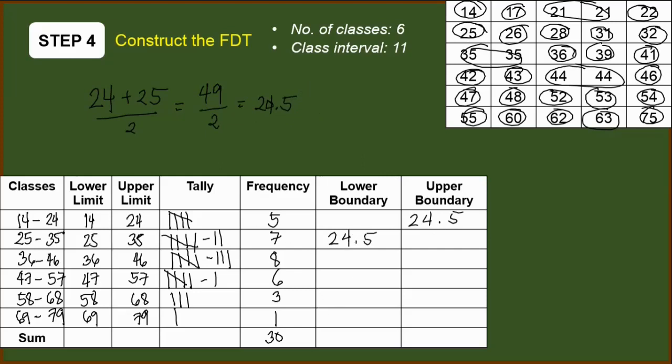24 plus 25 is 49 divided by 2. That is 24.5. Meaning, this 24.5 will be the upper boundary of the first class and the lower boundary of the second class. Same applies with 35 and 36. We will get their average, and we will be arriving with a value of 35.5. This is also 35.5. Next, we have 46 and 47. Getting their average, we have 46.5, and this is also 46.5. Doing the same process, we will be arriving with 57.5. By the way, you may also notice that their difference is also 11, so we can just add 11 here.